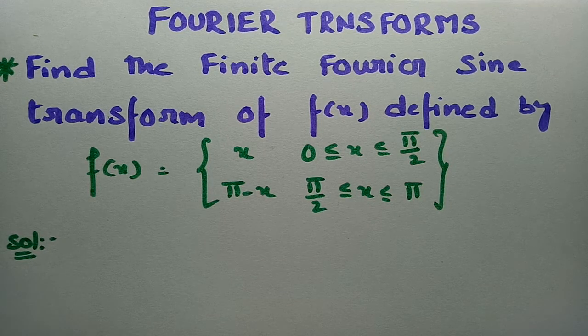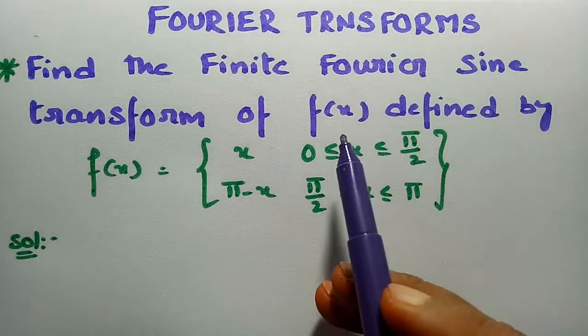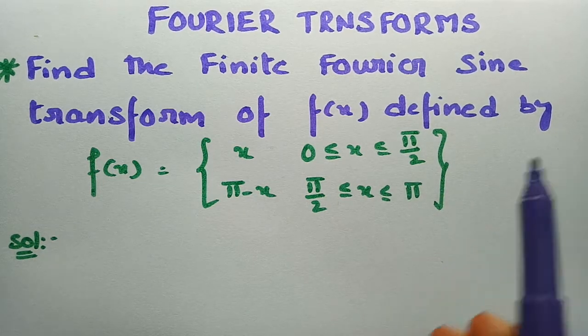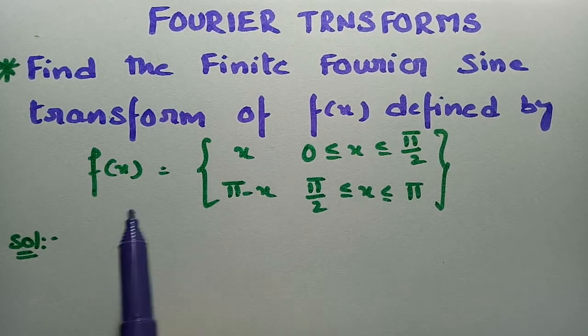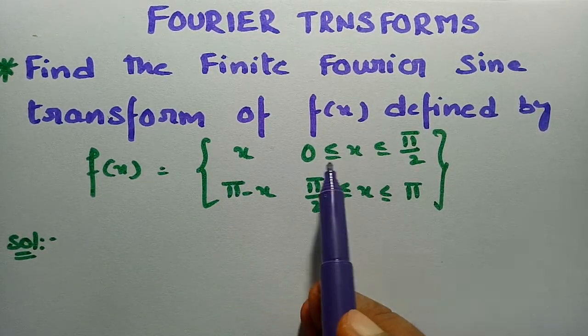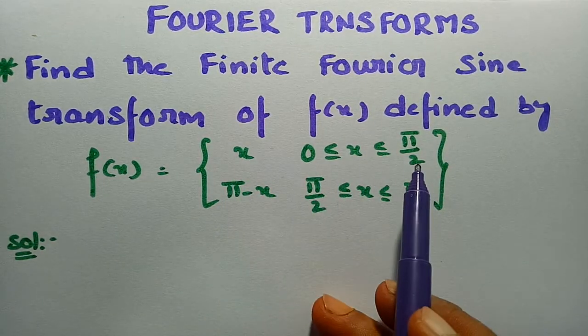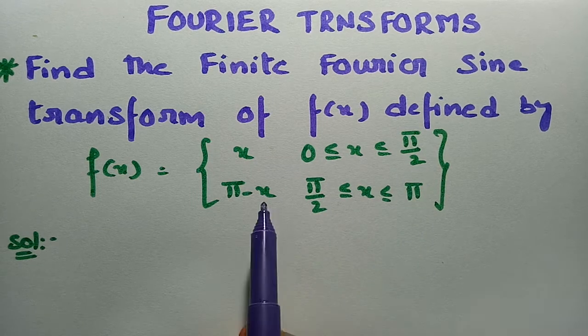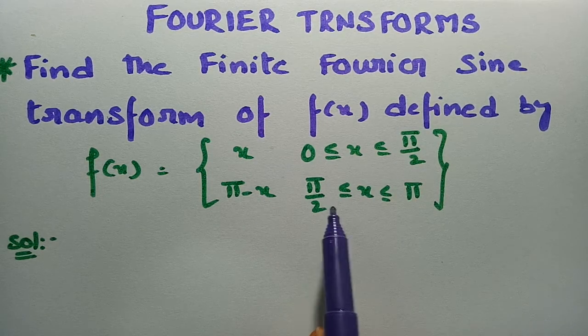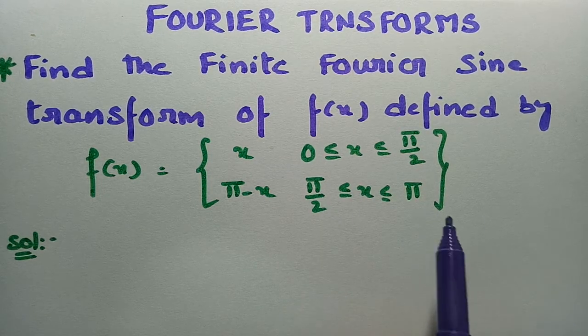We have to find the finite Fourier sine transforms of the function f(x), defined by f(x) = x when x lies between 0 to π/2, and f(x) = π − x when x lies between π/2 to π.